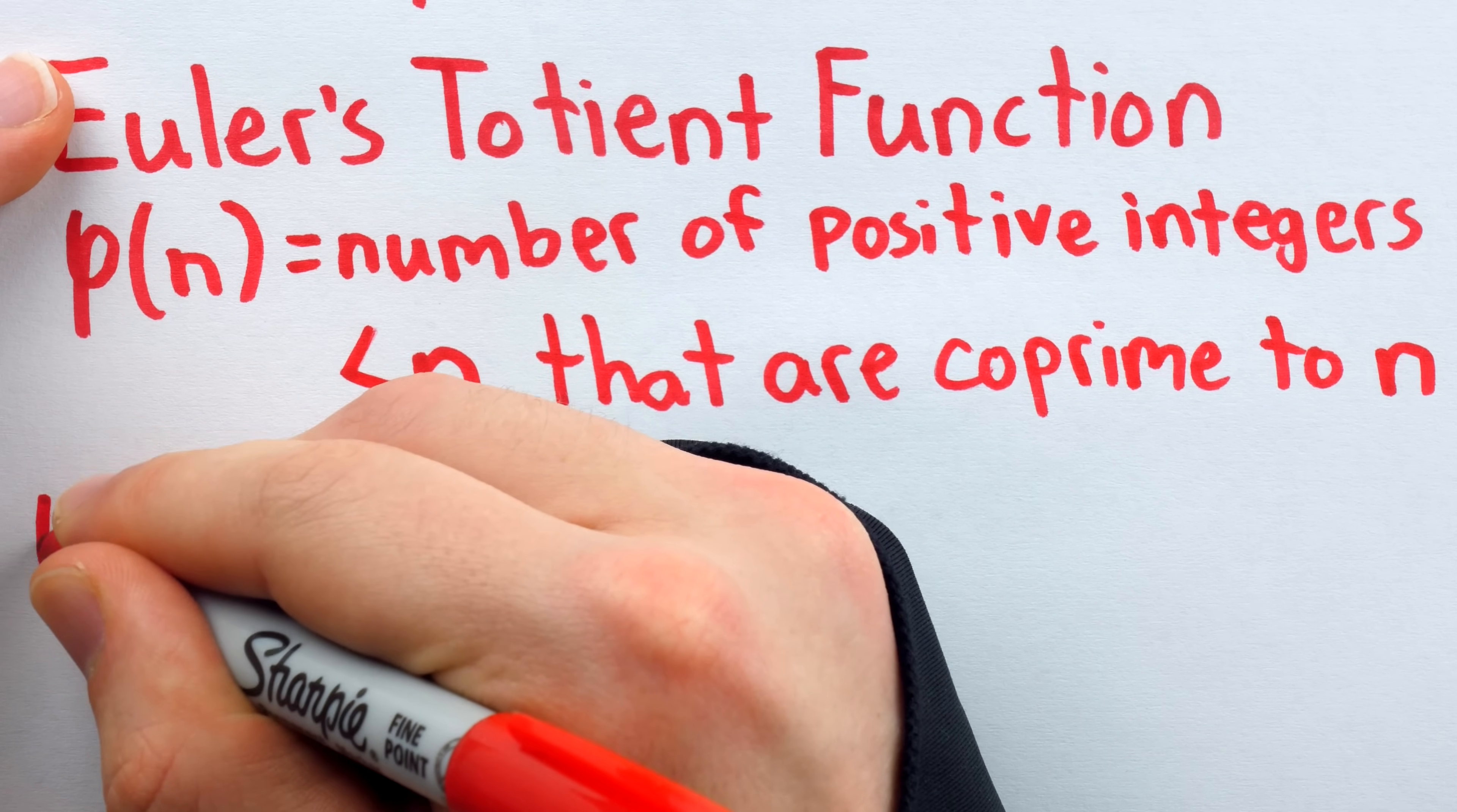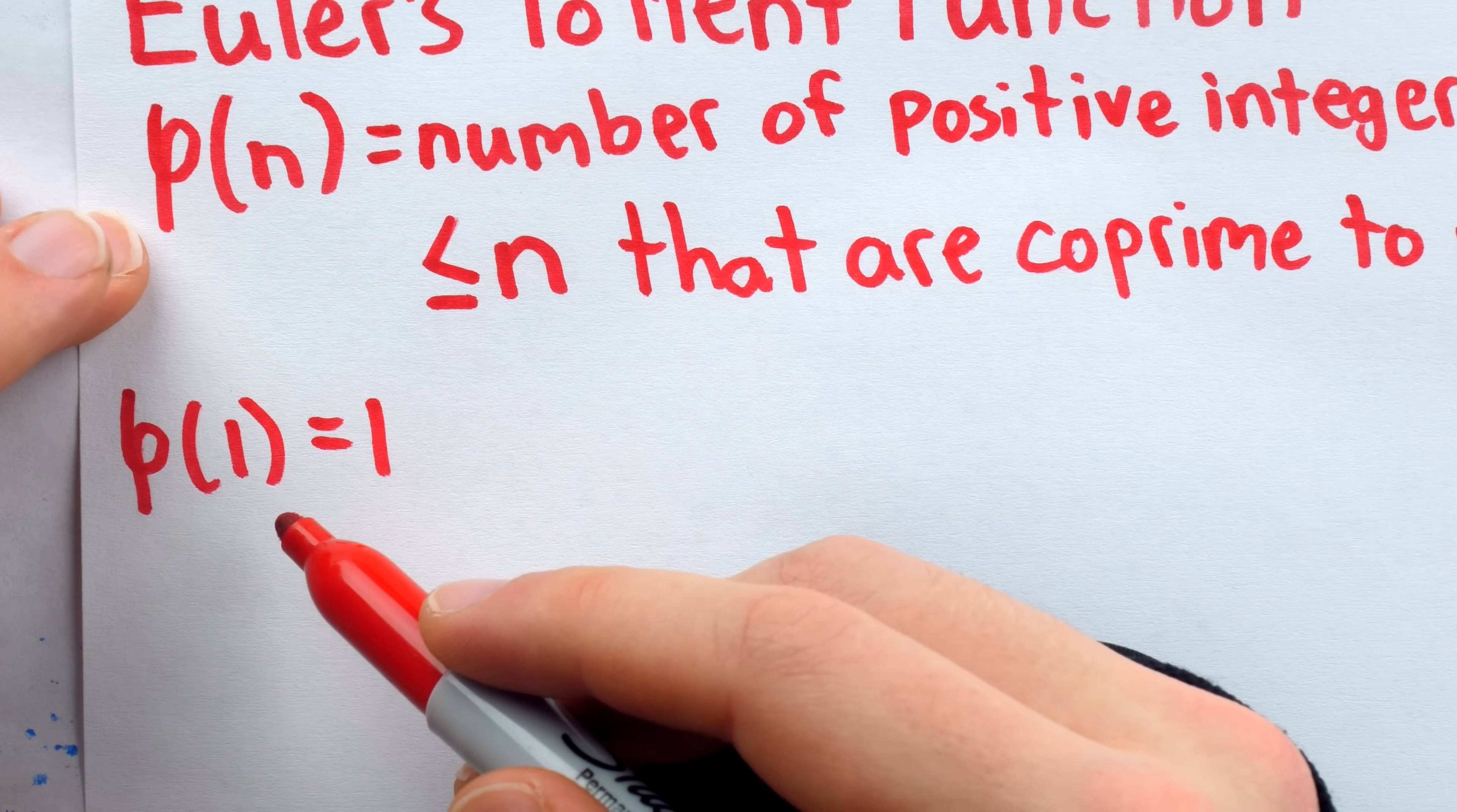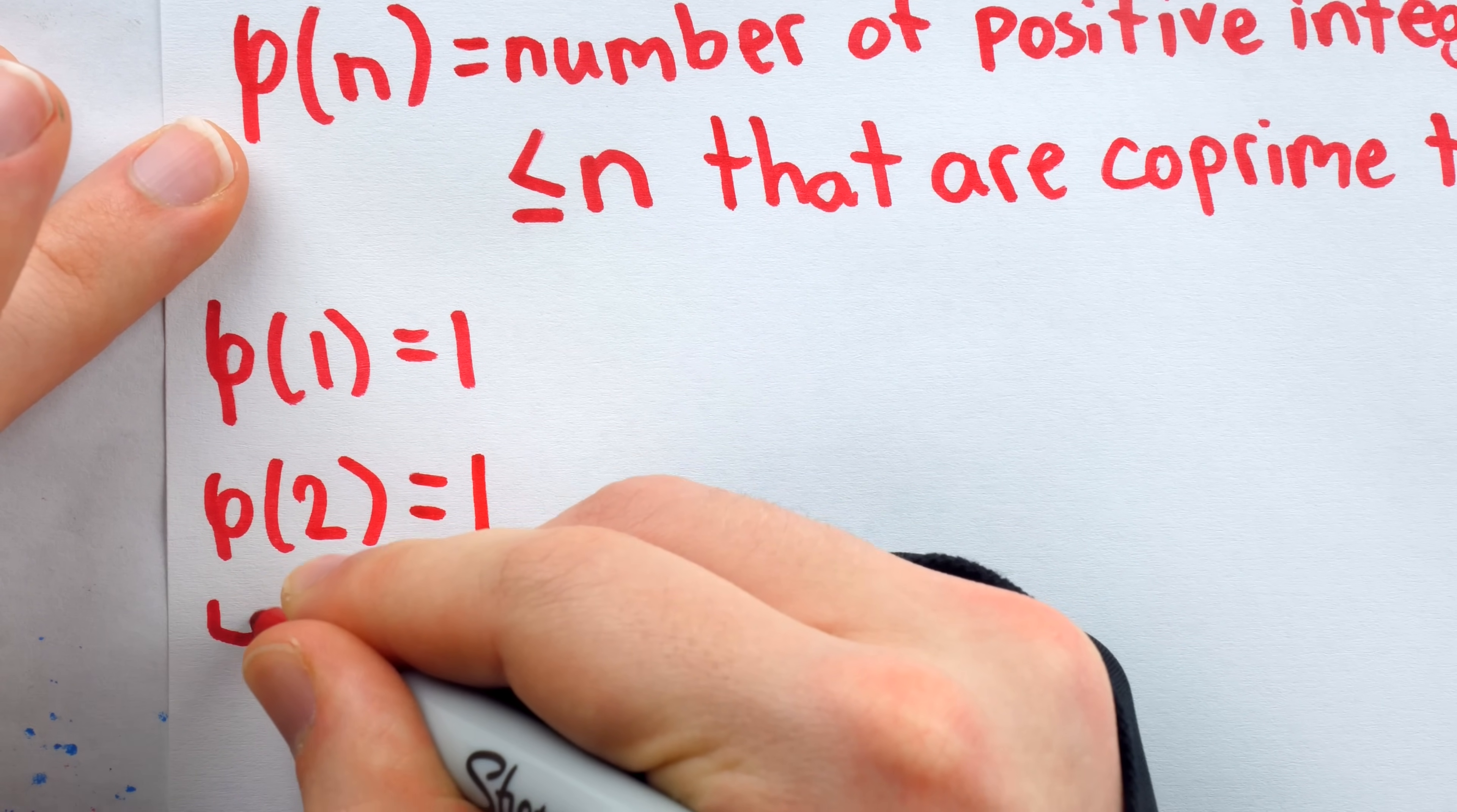For example, phi of 1 is equal to 1. The only positive integer less than or equal to 1 is 1, and the greatest common divisor of 1 and 1 is 1. So they are co-prime, and that's the only positive integer less than or equal to 1, which is co-prime to 1. For another example, phi of 2. 1 is co-prime to 2, but 2 is not co-prime to 2. So there's just 1 positive integer less than or equal to 2 that's co-prime to 2.